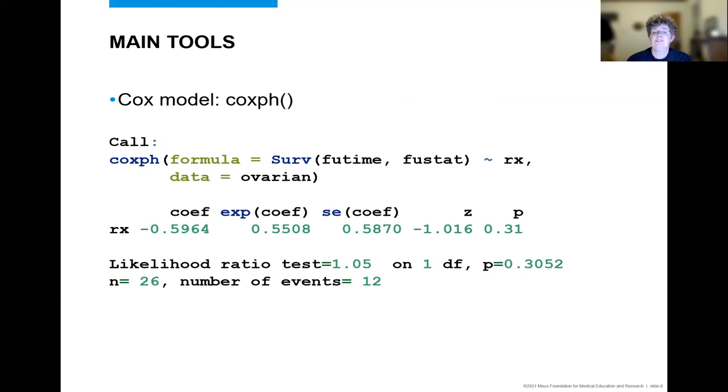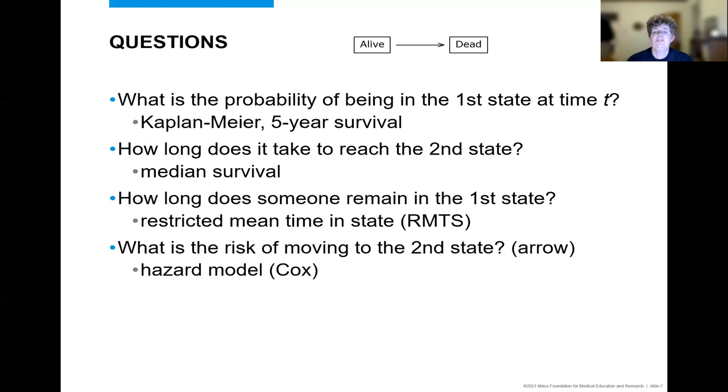There are also a number of standard helper functions, such as plot, print, and summary, associated with these core functions. Questions that we often ask are: what's the probability of being alive at five years? What is the median length of time until death? How long, on average, do people stay alive during the first five years? What risk factors increase your risk of death?